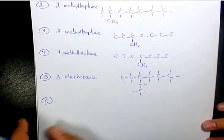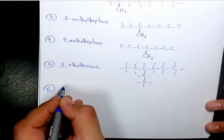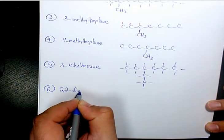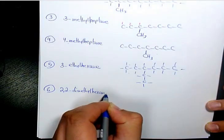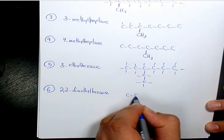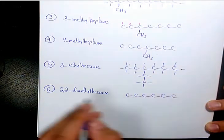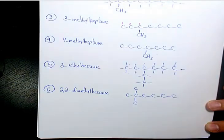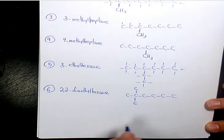The next one — instead of an ethyl group we can have two methyl groups, which is going to be 2,2-dimethylhexane. It's 1, 2, 3, 4, 5, 6 carbons and both methyl groups are on carbon two.